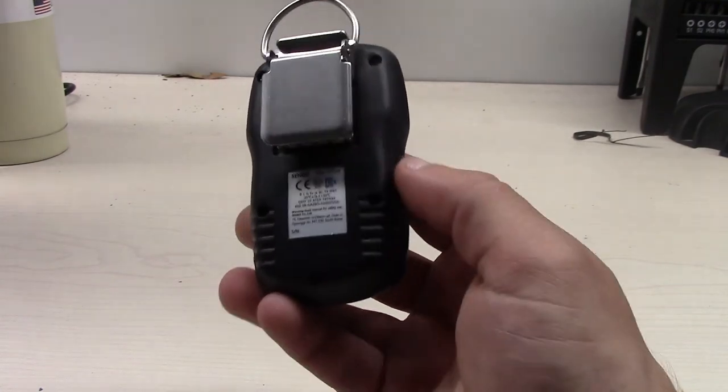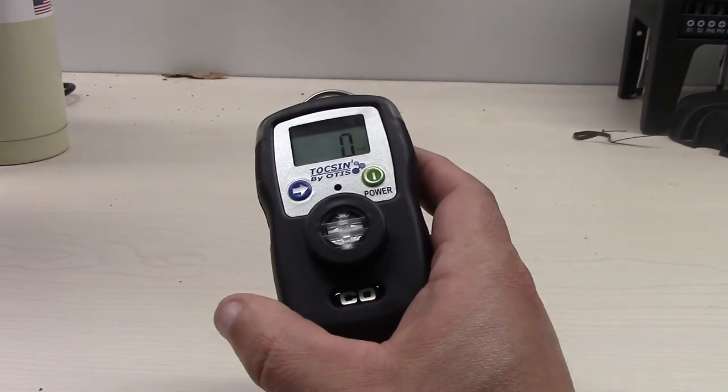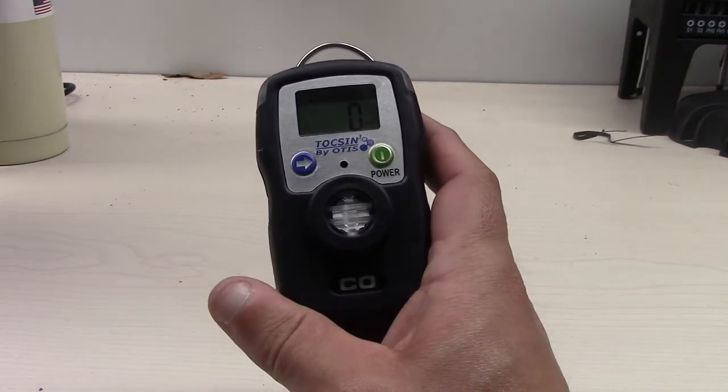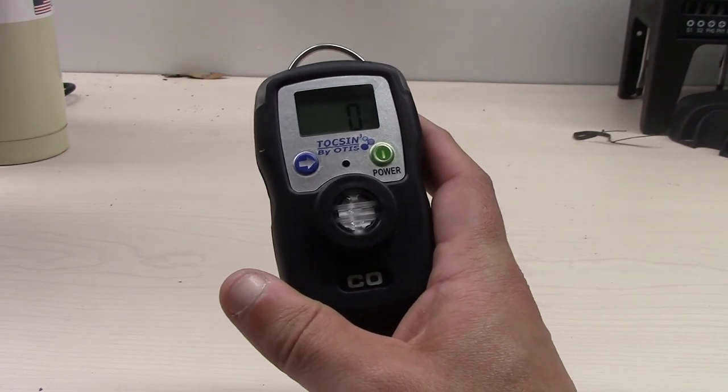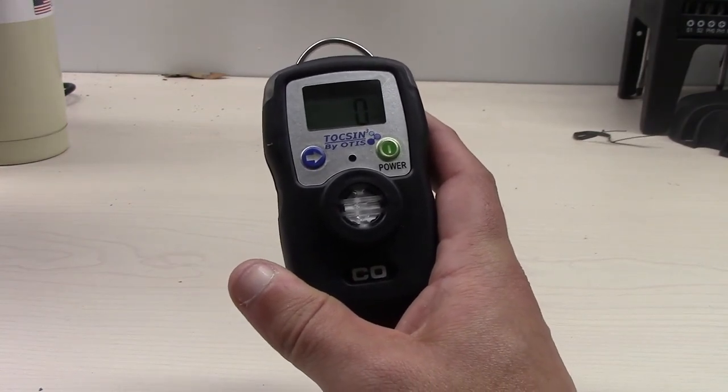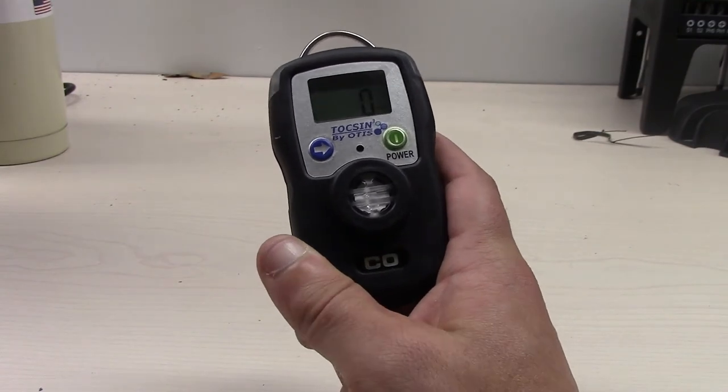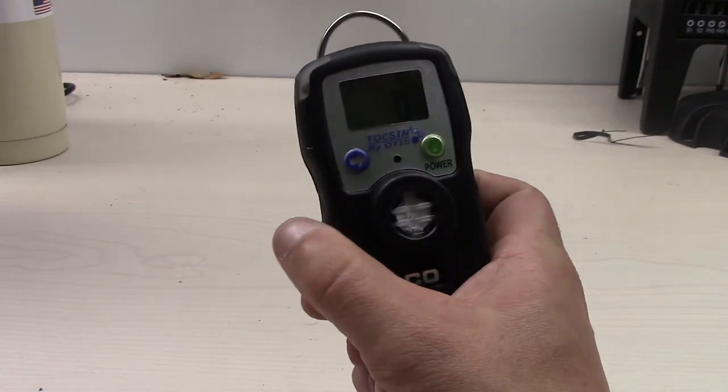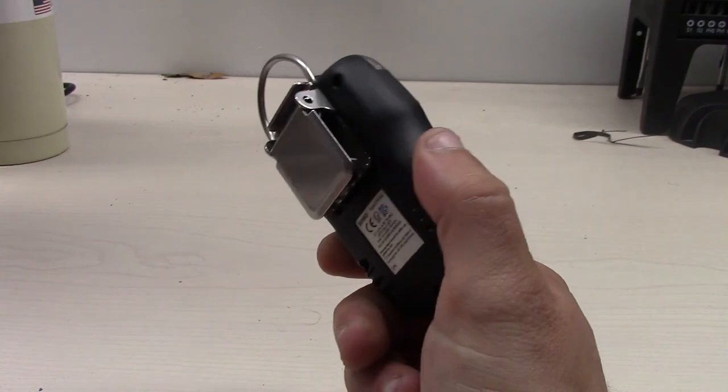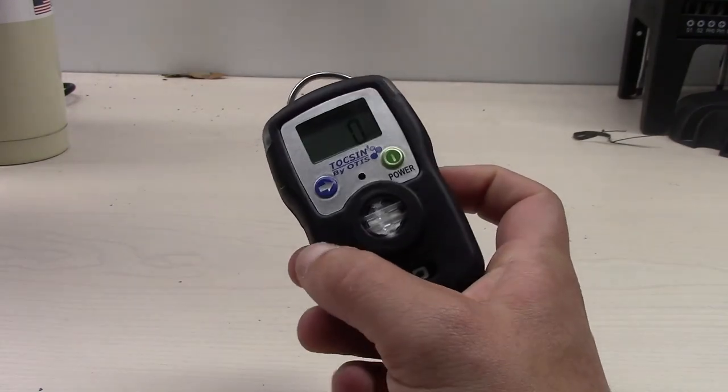So anyway, this is the Otis Instruments OI315. This is available today at DiamondSci.com. Or you can call us. Ask for Alex at 321-223-7500 and I can talk to you about this thing. Thanks a lot.